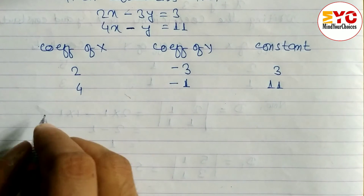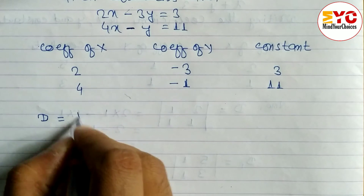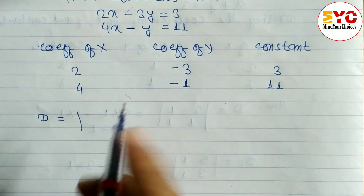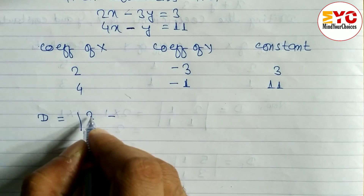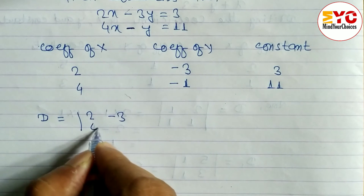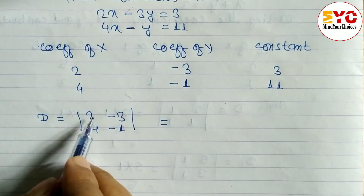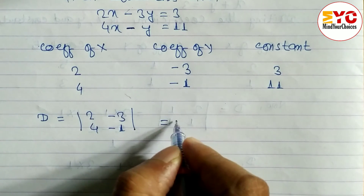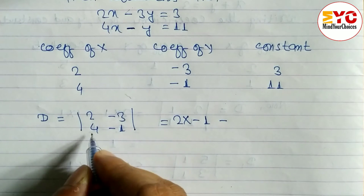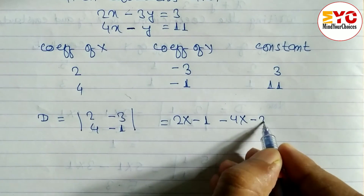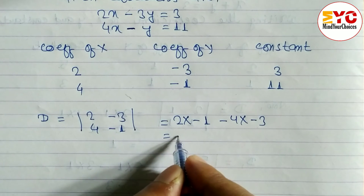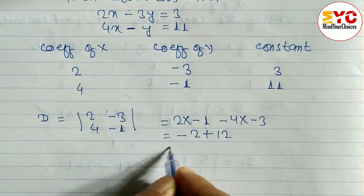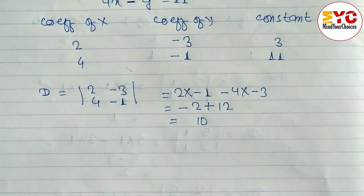To find D, we take the coefficients of x and y inside vertical lines to find the determinant: 2, minus 3, 4, minus 1. We cross-multiply along the leading diagonal: 2 into minus 1, minus 4 into minus 3. That gives us minus 2 plus 12, which equals 10.